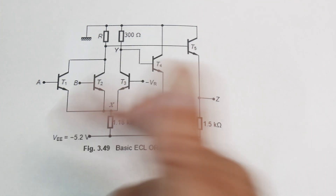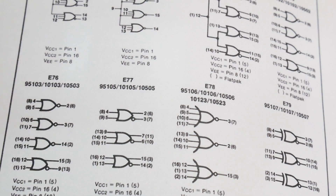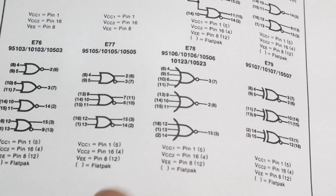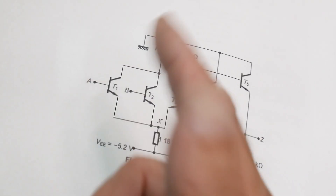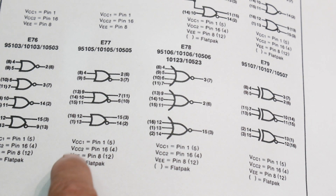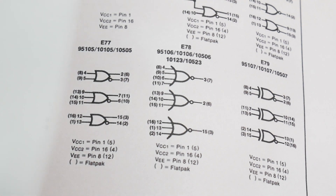One interesting thing from the databook note: pin 1 and pin 16 are VCC and pin 8 is VEE. VEE is the negative one and VCC is the positive, so you connect pin 8 to ground and pins 1 and 16 to plus 5.2 volts. It's a really strange, really old part - you're not going to find one of these anymore, but that's what's in there.